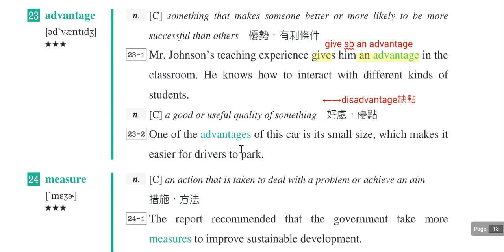另外一个意思是优点、好处，相反词是disadvantage。例句：One of the advantages of this car is its small size，这个车子的其中一个好处就是它很小。